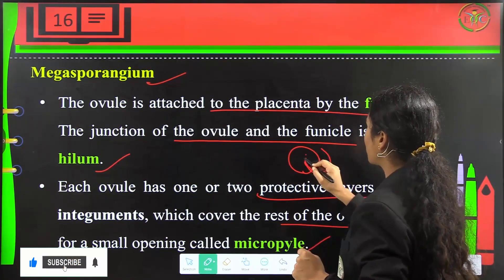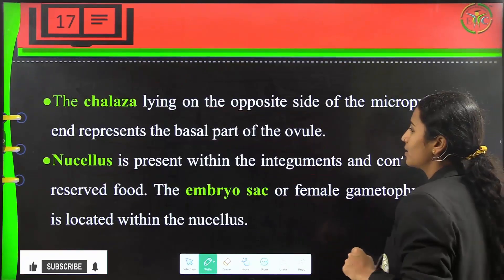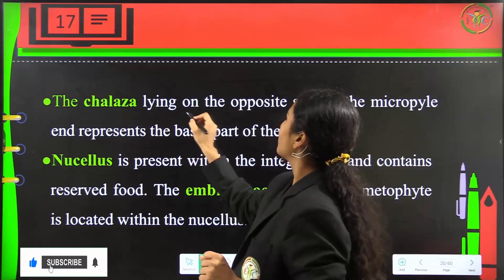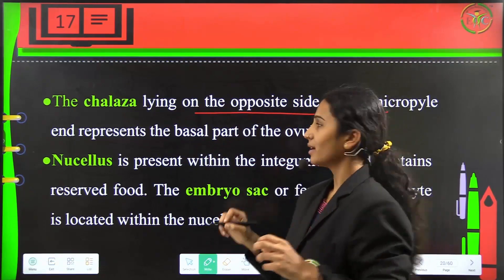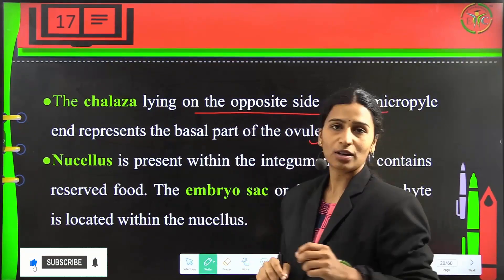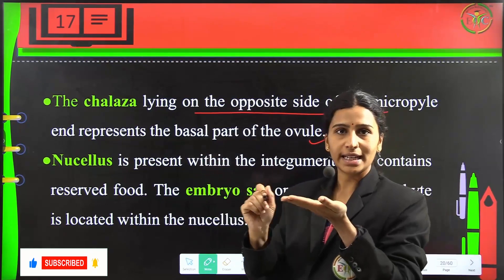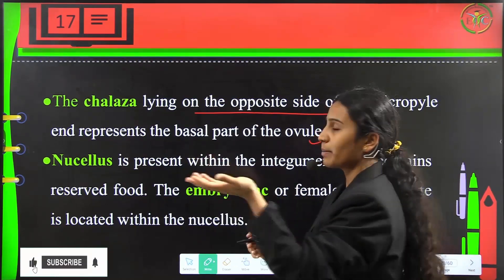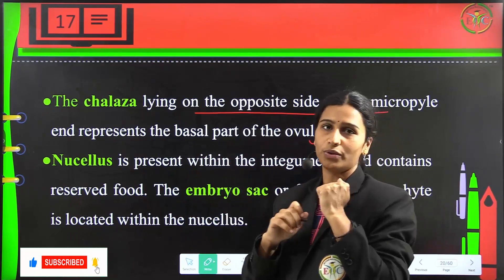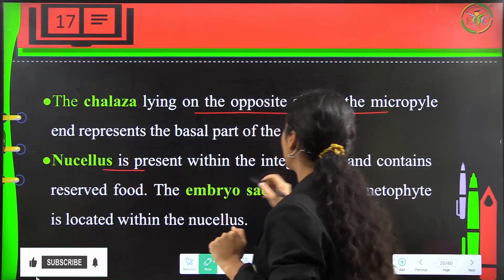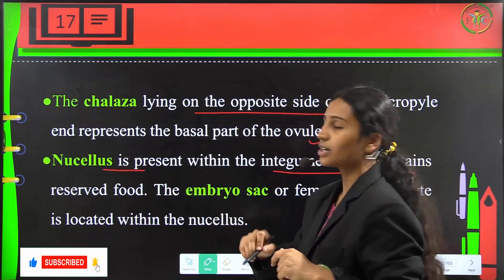The micropyle end connects to the pollen tube. The chalaza lies on the opposite side of the micropyle end and represents the basal part of the ovule. Nucellus is present within the integument and consists of reserved food.